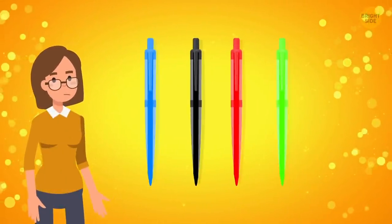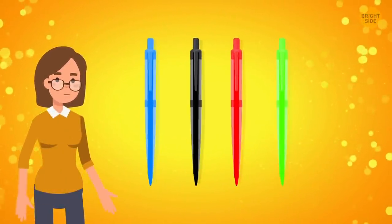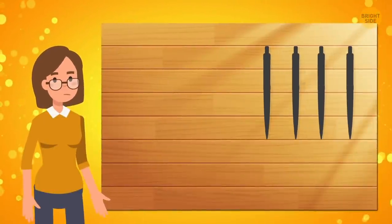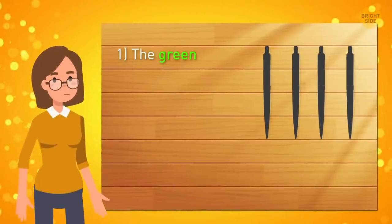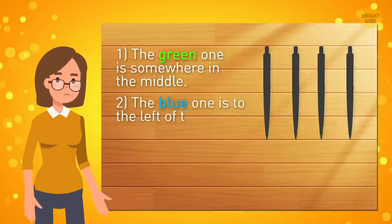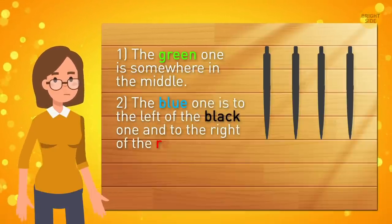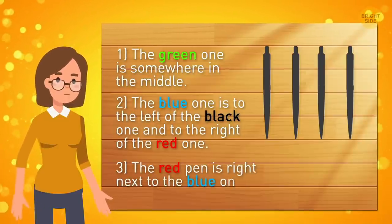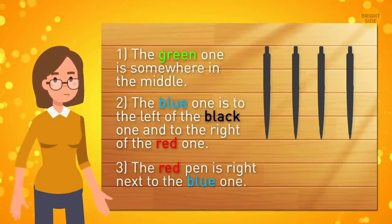Maya has four pens, a blue one, a black one, a red one, and a green one. They lay on the table in some order. Here are some hints. 1. The green one is somewhere in the middle. 2. The blue one is to the left of the black one and to the right of the red one. 3. The red pen is right next to the blue one. So, what's the order of the pens?